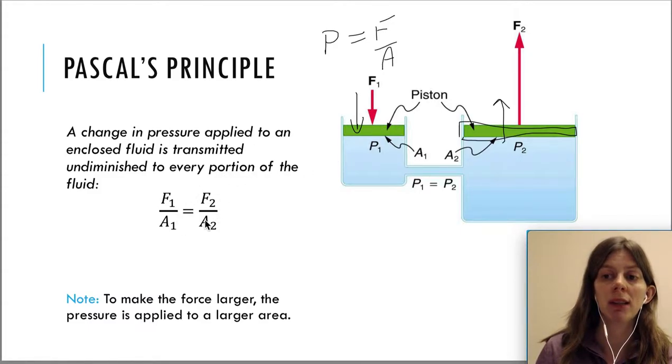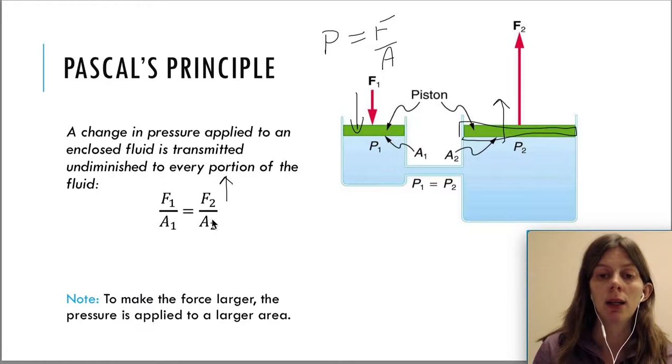If you look at the equation, that makes sense. If you want F2 to be big, well then what do you have to do to A2 so that this ratio on the right hand side still equals the one on the left hand side? You have to make the area bigger as well.